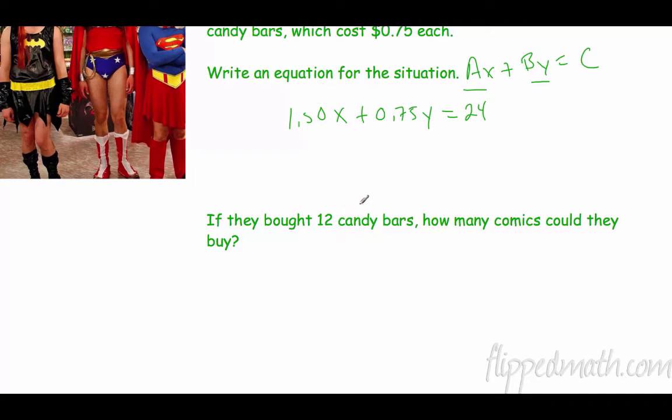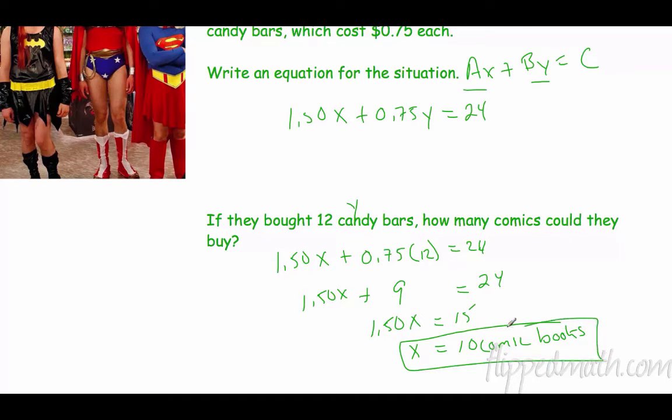Alright, if they bought 12 candy bars, and the candy bars were Y, how many comics could they buy? Well, let's see, $1.50, we don't know how many comic books, plus .075 times, we know we have 12 of those, and it equals 24. .75 times 12, I believe that's 9. Subtract 9 to the other side, so we have $1.50x equals 15. Divide both sides by 150, and you should get 10 comic books. Alright? There you have it.